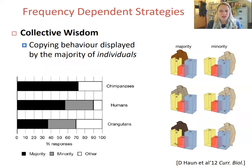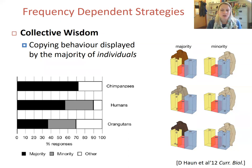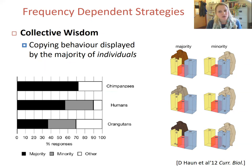But this wasn't the case for orangutans. It's thought this could be because the more solitary social system of orangutans gives them less opportunity to collect information from multiple different individuals, and hence they don't distinguish between the majority and minority condition.